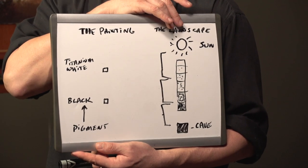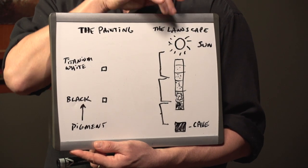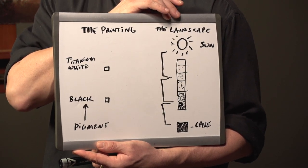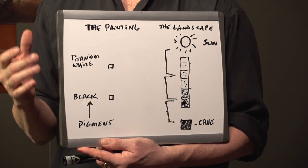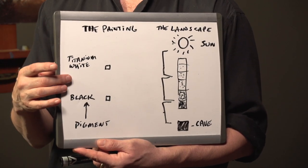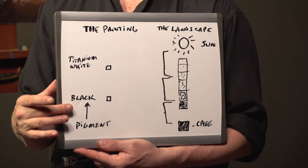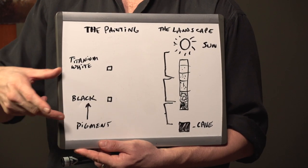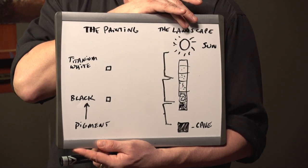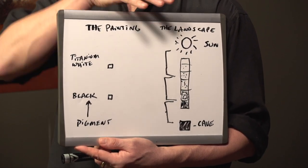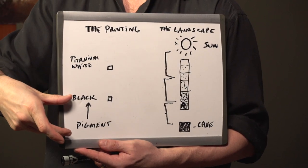In nature, we find this expanded value range from the white of the sun down to a dark black cave where there is no light. On the painting, pigments don't have that value range. We have titanium white, which is about here, and then we have black of any kind you choose, which is there. This value range is nowhere as large as we find in nature. Because of that, we have to compress all these values into a shorter range.